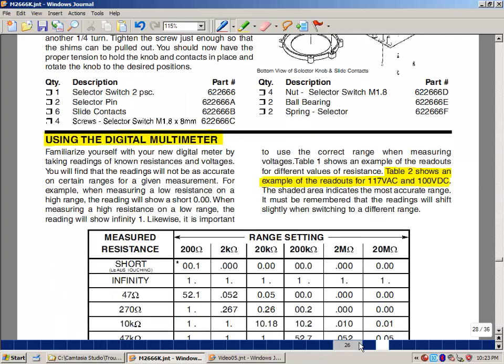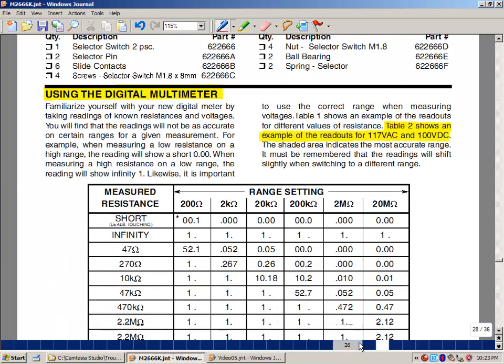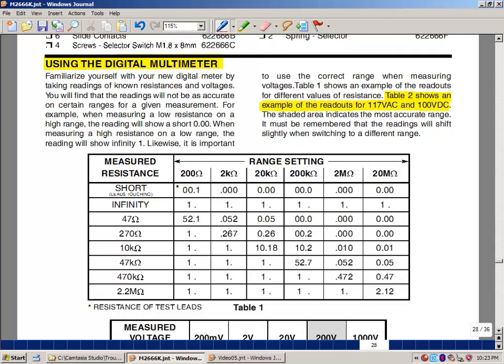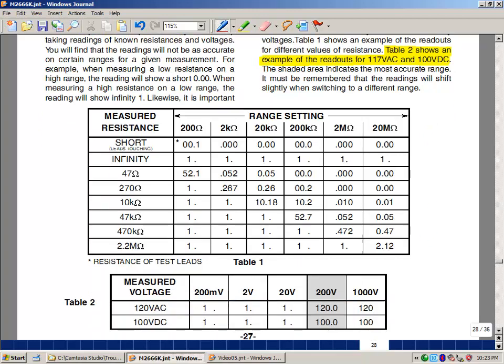The next section deals with using the digital multimeter, giving some data here for different values of resistors on different settings. I also give a table of measured voltages and recommend that you hook up 120 volts AC to the meter. I would recommend that you not do that. That's very dangerous and if we make a mistake, we could get electrocuted.